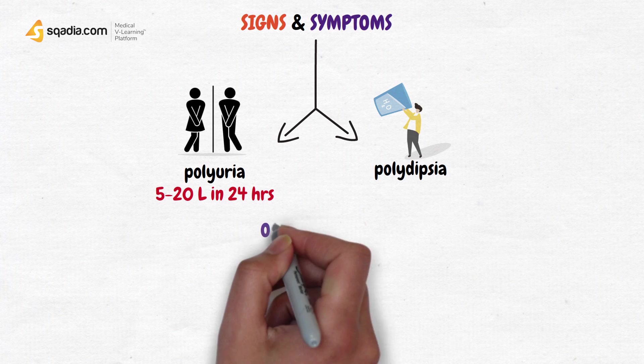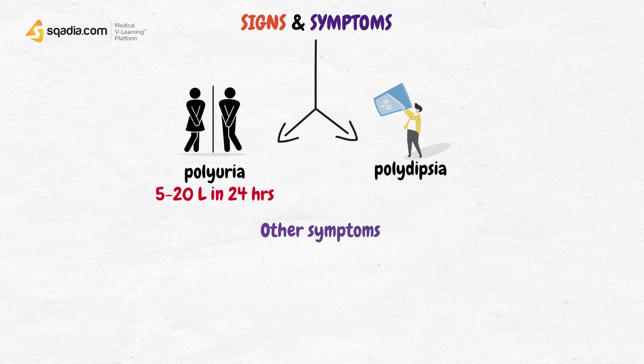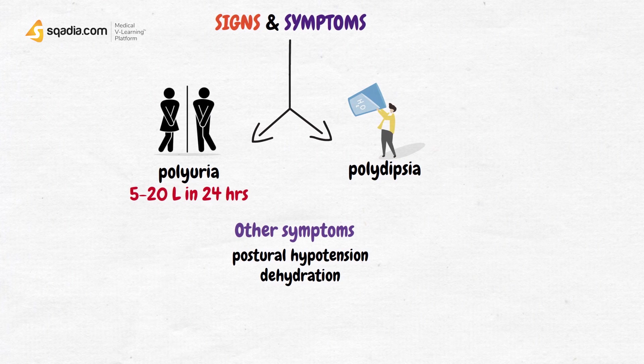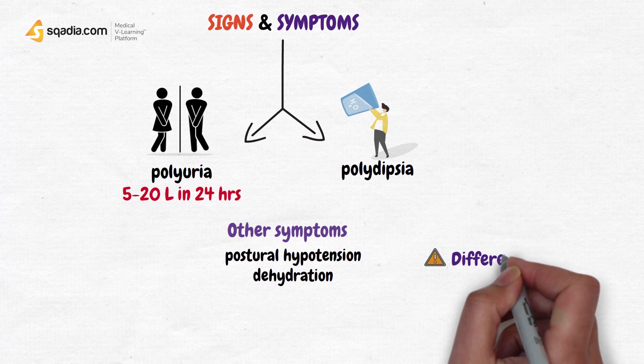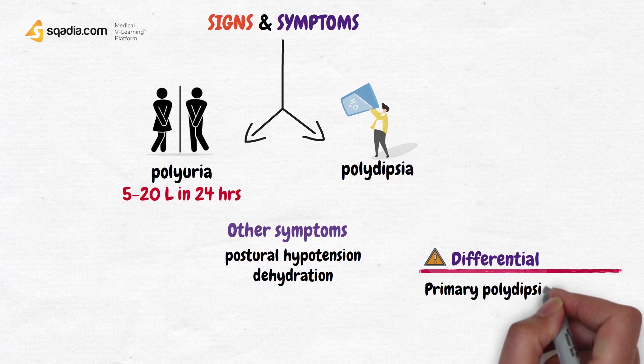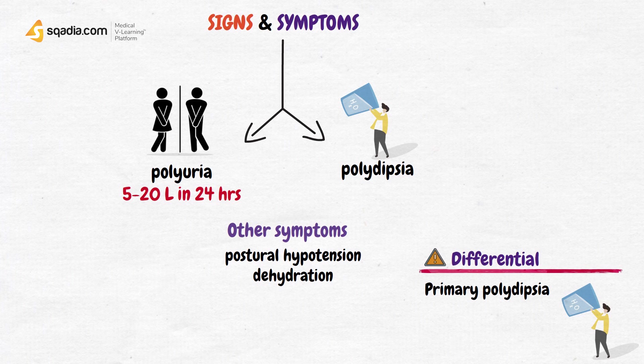Patients may also show symptoms of postural hypertension and dehydration. Here, I also want you to know about an important differential of diabetes insipidus, which is primary polydipsia. This condition occurs because the patient drinks a lot of water only because he is just always thirsty, or due to excessive IV fluids.